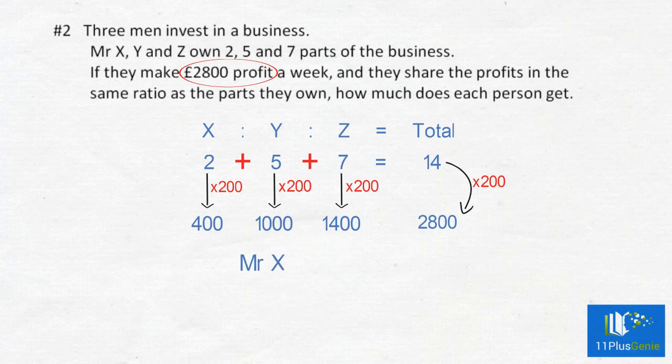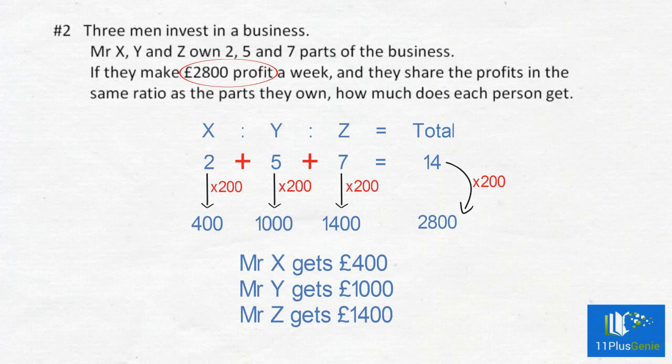Mr. X gets 400 pounds. Mr. Y gets 1,000 pounds. Mr. Z gets 1,400 pounds.